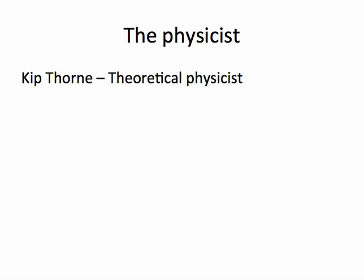The first thing to talk about is the physicist, this man named Kip Thorne. He's a theoretical physicist. He's worked on black holes. He is the authority, probably worldwide, on gravitation and black holes and that part of modern physics.